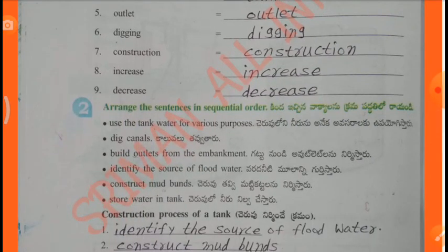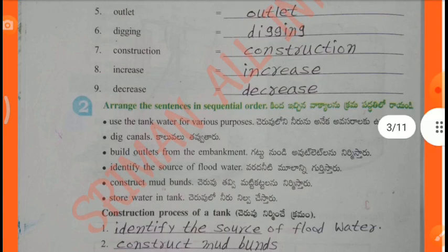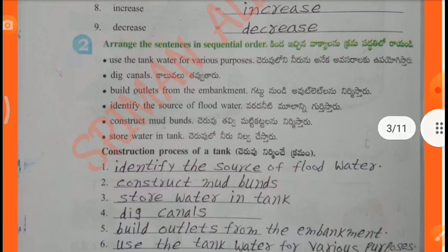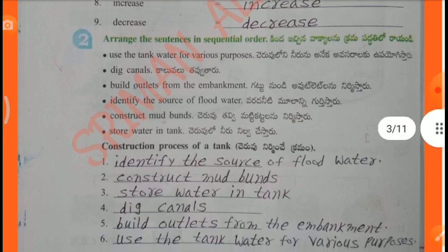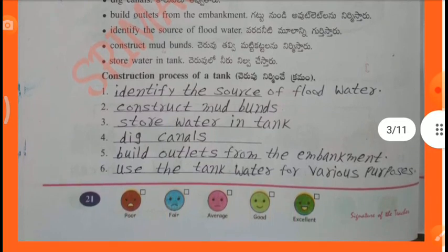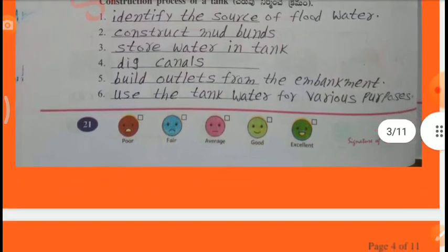Arrange the sentences in sequential order — the process of constructing a tank: 1st Identify the source of flood water, 2nd Construct mud bunds, 3rd Store water in tank, 4th Dig canals, 5th Build outlets from the embankment, 6th Use the tank water for various purposes.